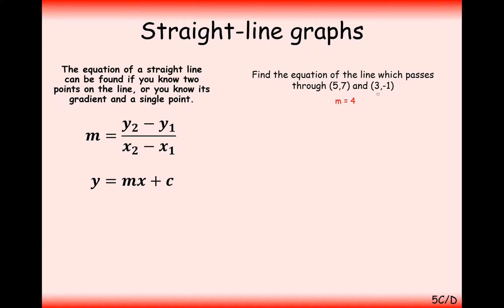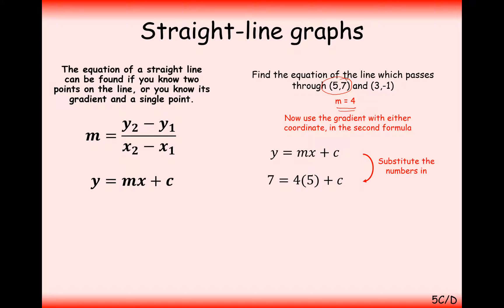Now we can use either one of these coordinates along with m equals 4 to find the equation of the line. We set up y equals mx plus c — the only unknown is c. I'd always pick the coordinate with either both positive numbers or easier numbers. So substituting in the first coordinate: y is 7, m is 4, x is 5. It comes out as minus 13 again — it's not always minus 13, it just happened that way again.